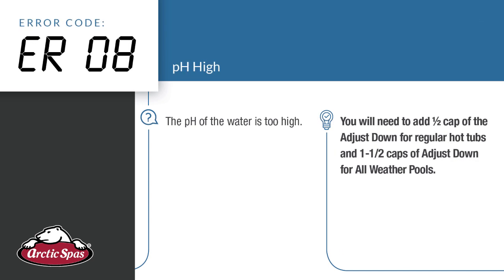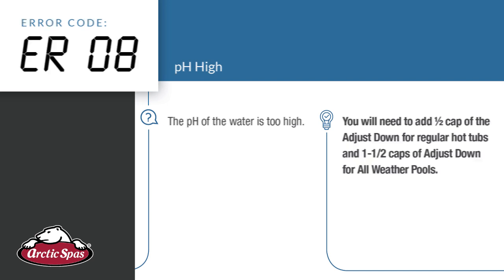ER08 — pH high. The pH of the water is too high. You'll need to add a half a capful of Adjust Down for regular hot tubs, and one and a half caps of Adjust Down for all weather pools.